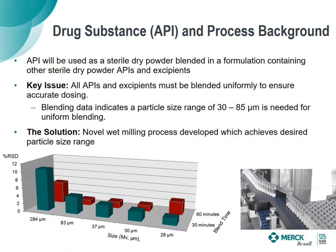Before we dive into all the data, I want to give a little background on the process so you can get a feel for what we're doing and why. The drug substance, otherwise known as the API that we're making, needs to be a sterile dry powder, because it's going to be used as an injectable.